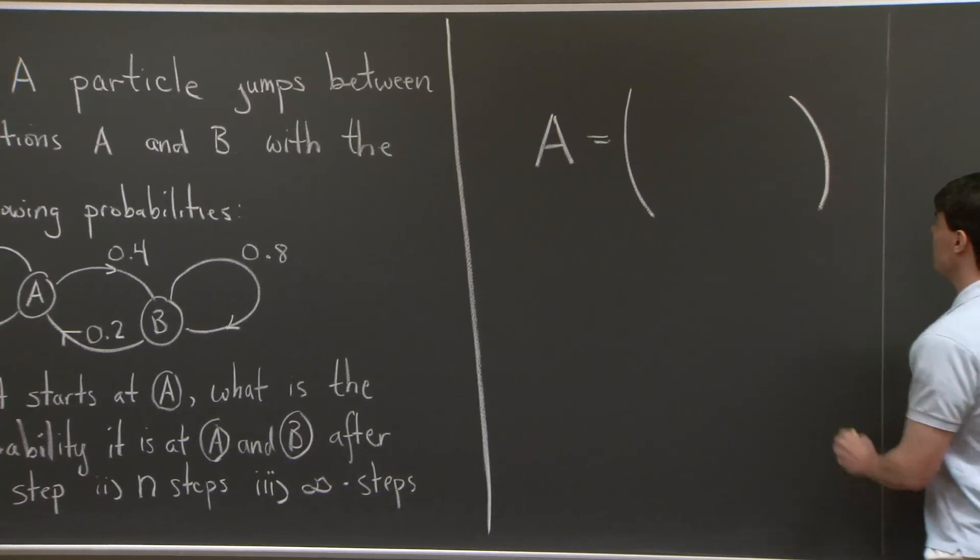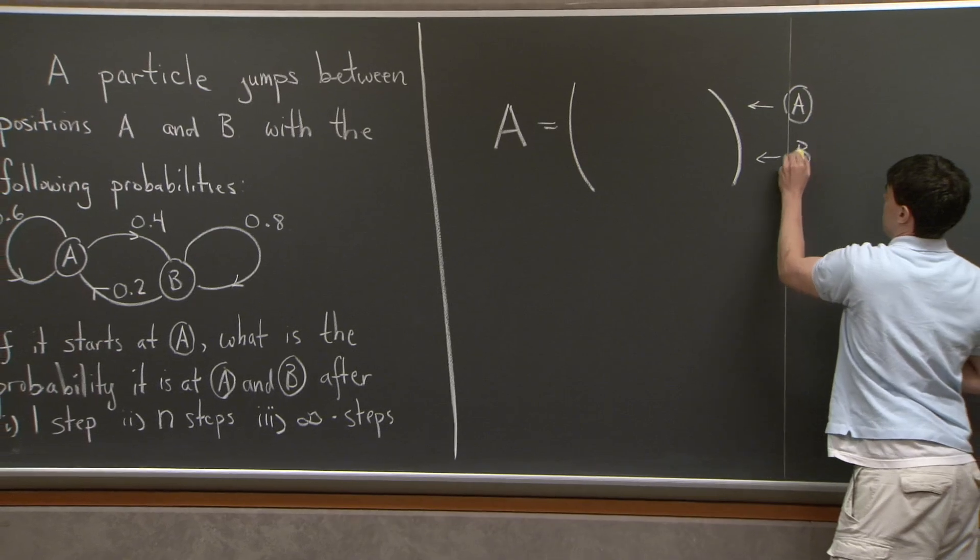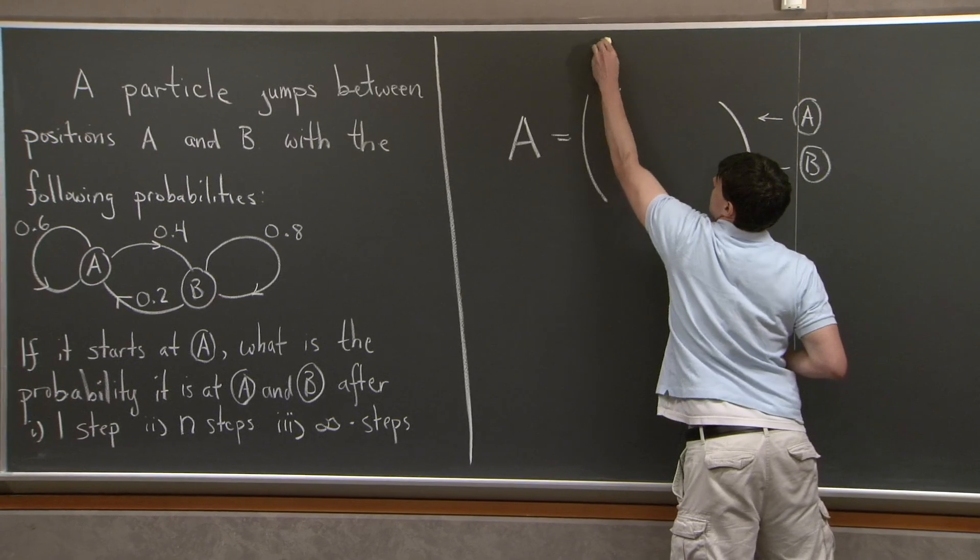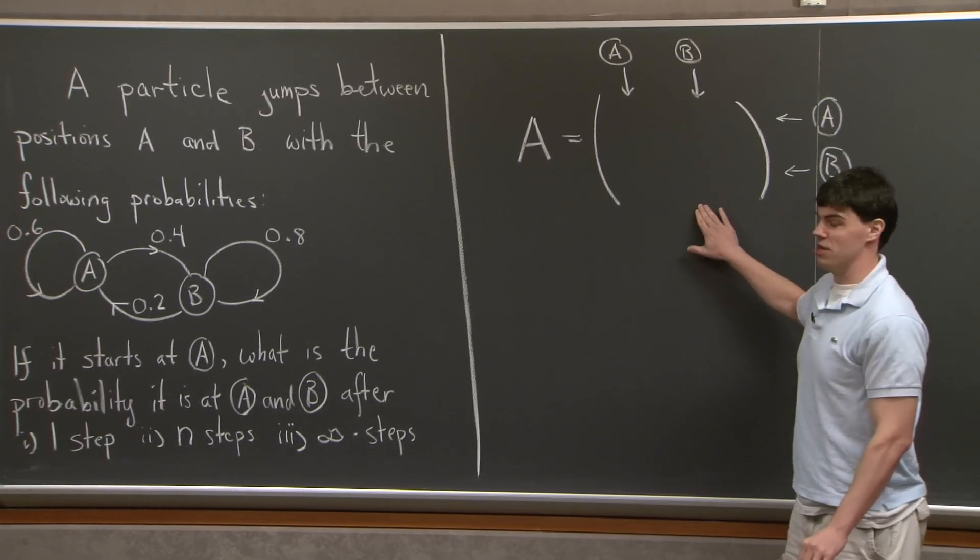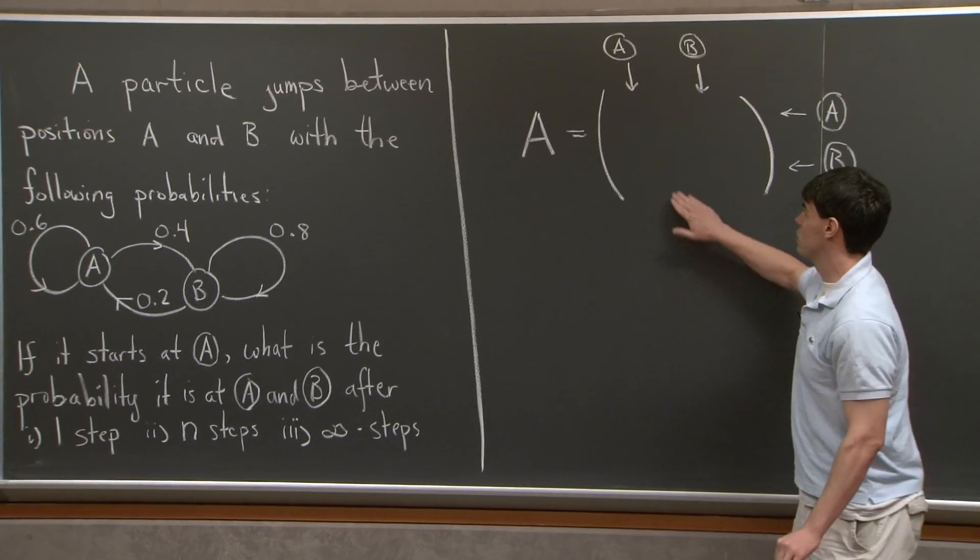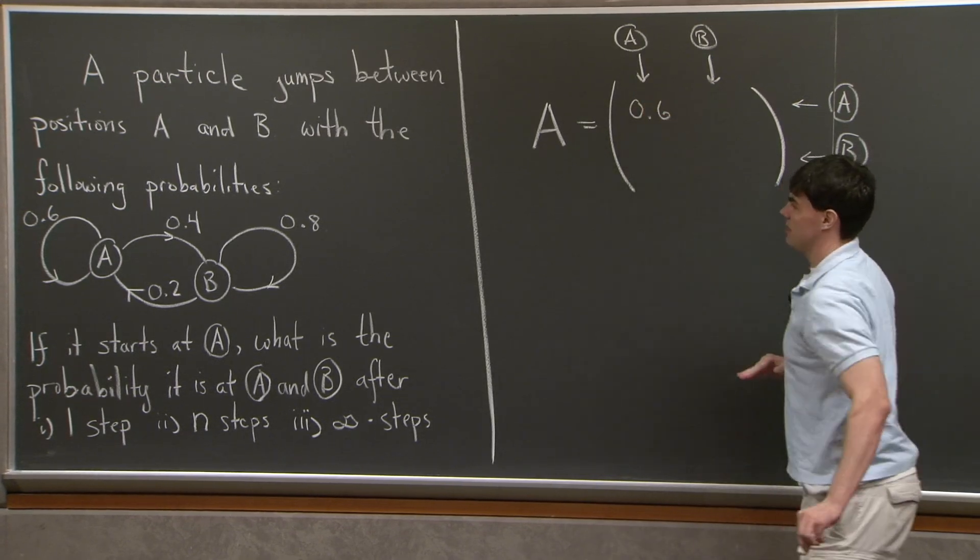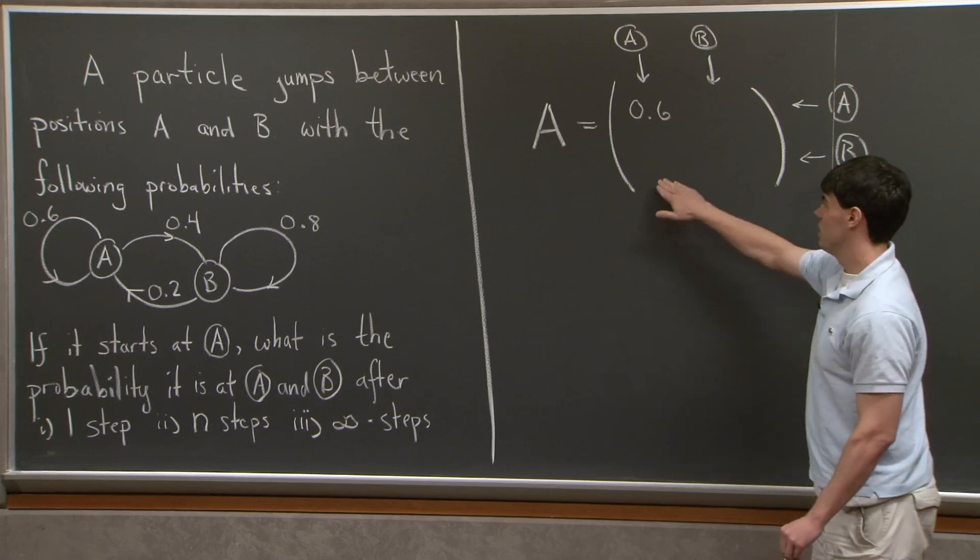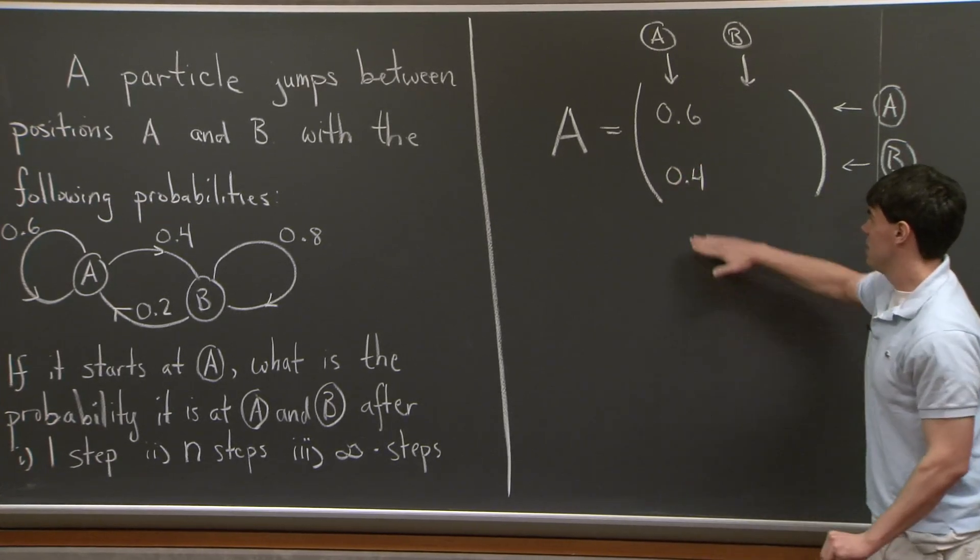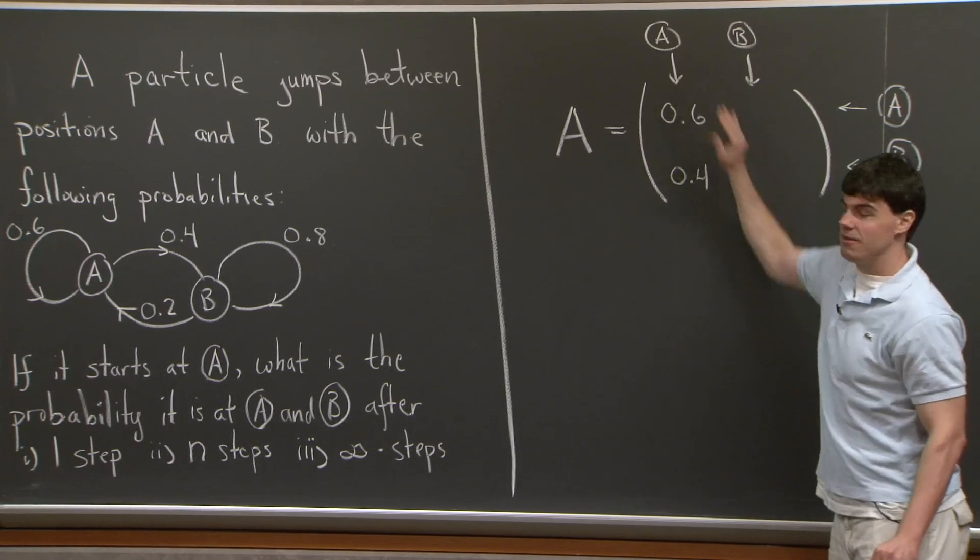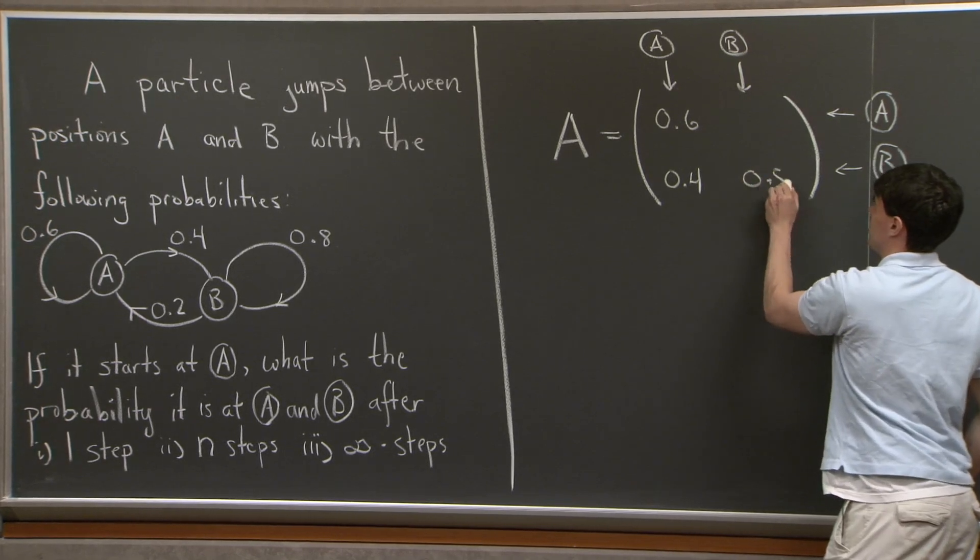So I'm going to call this matrix A, and I'm going to associate the first row of A with particle position A and particle position B, and I'll associate the first and second columns with particle positions A and B. And then what I'm going to do is I'm going to fill in this matrix with the probability distributions. So specifically, what's going to go in this top left corner? Well, the number 0.6, which represents the probability that I stay at position A given that I start at position A. What's going to go here in the bottom left-hand corner? Well, we're going to put 0.4 because this is the probability that I wind up at B given that I start at A. And then lastly, we'll fill in these other two columns, or the second column, with 0.8 and 0.2.